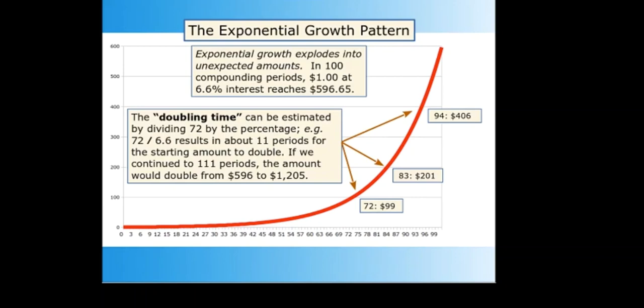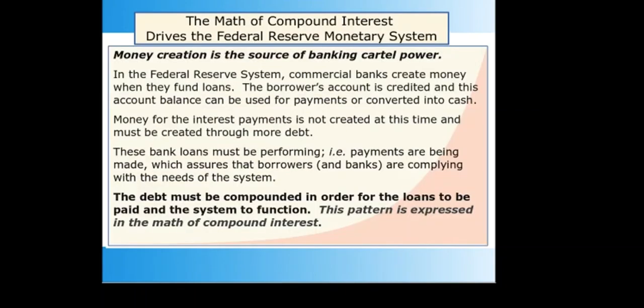I use the 6.6% annual rate quite a bit in this presentation, so keep in mind that amounts will double in about 11 years. We tend to think of 6.6% growth as a small rate, but we should be thinking about repeated doubling to understand the effect. Once the amounts become alarming, in only a decade they will have doubled again. In the graph we can see how the doubling becomes an extreme change as the compounding continues for many periods.